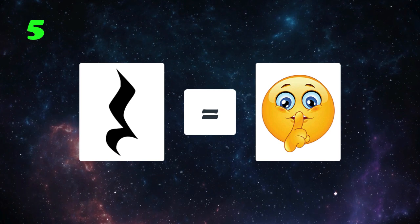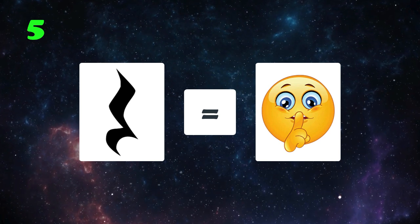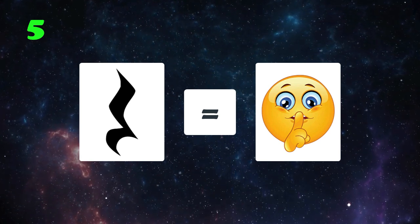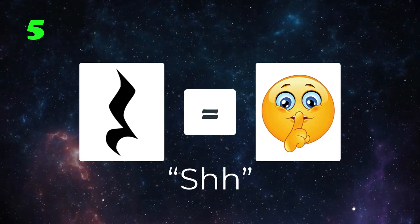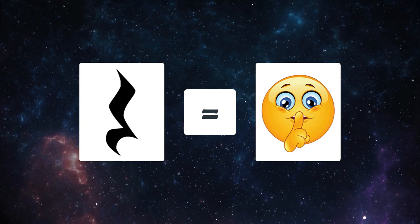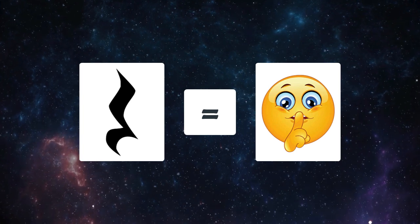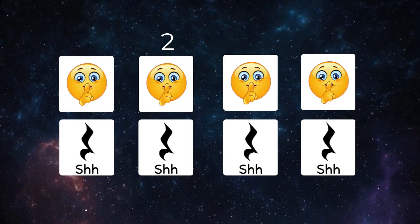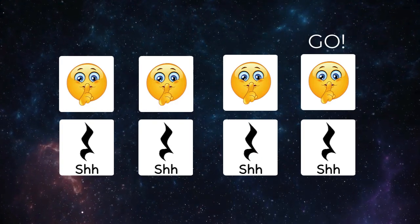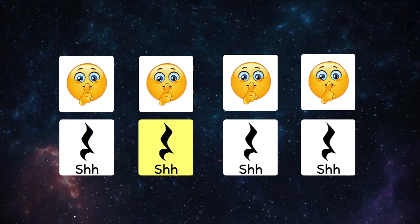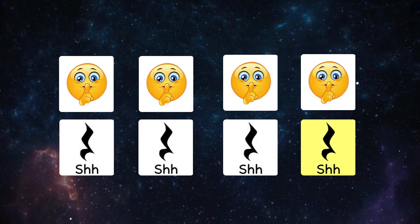When you see a quarter rest, you'll be silent for one beat, or you can whisper the word 'shh' to help you remember it's silent. But it still counts as a beat. One, two, ready, go. Shh, shh, shh, shh.